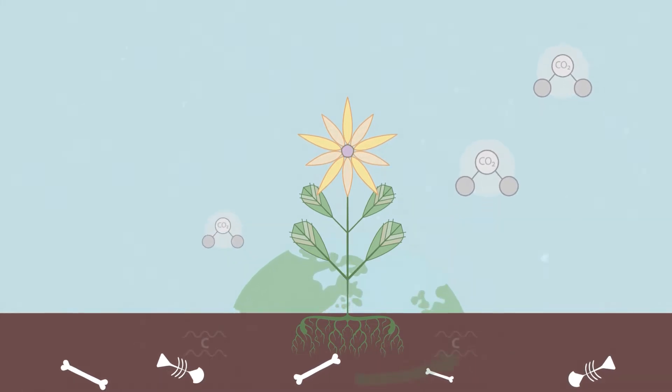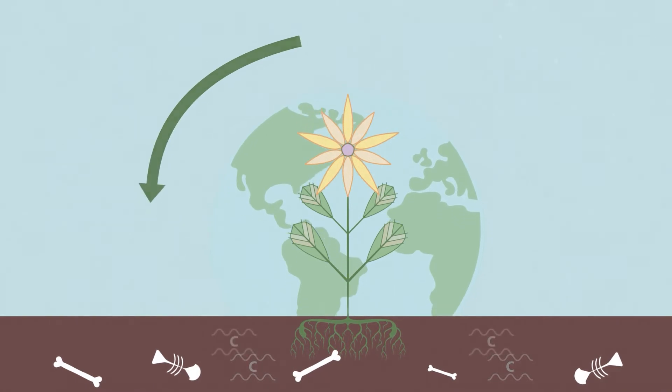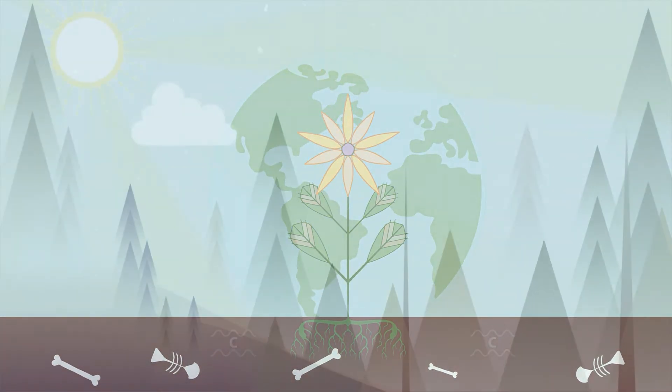Carbon atoms are in all living things and constantly circulate through organisms, the land, oceans, and the atmosphere.